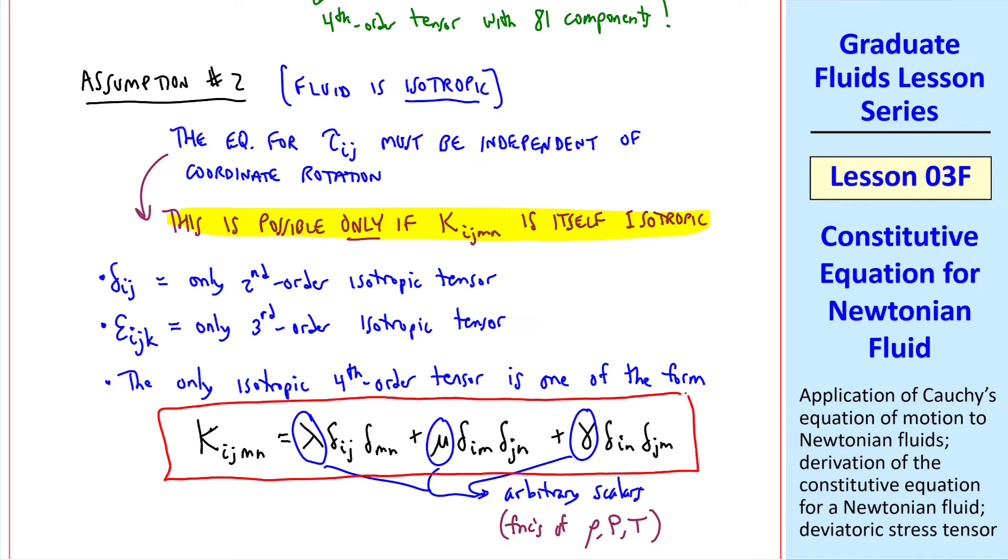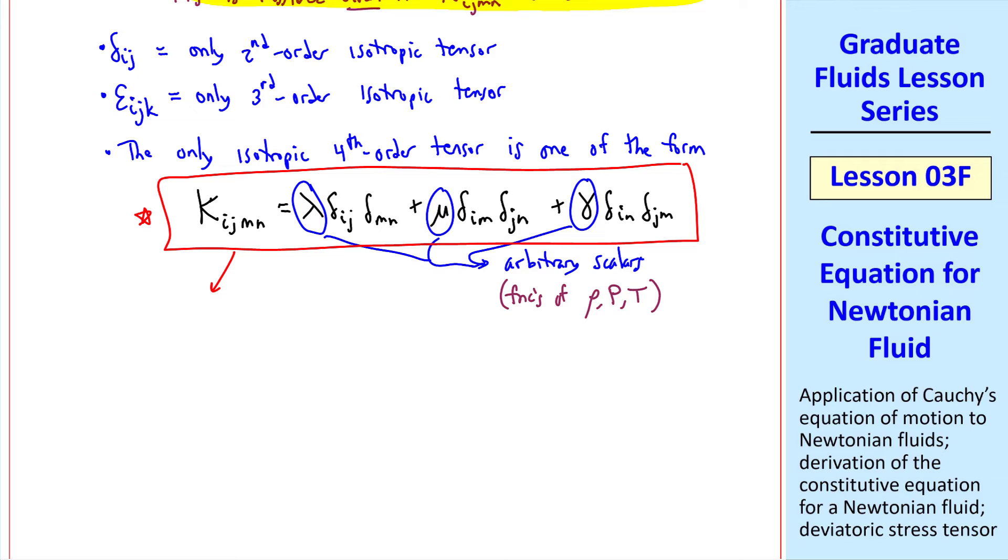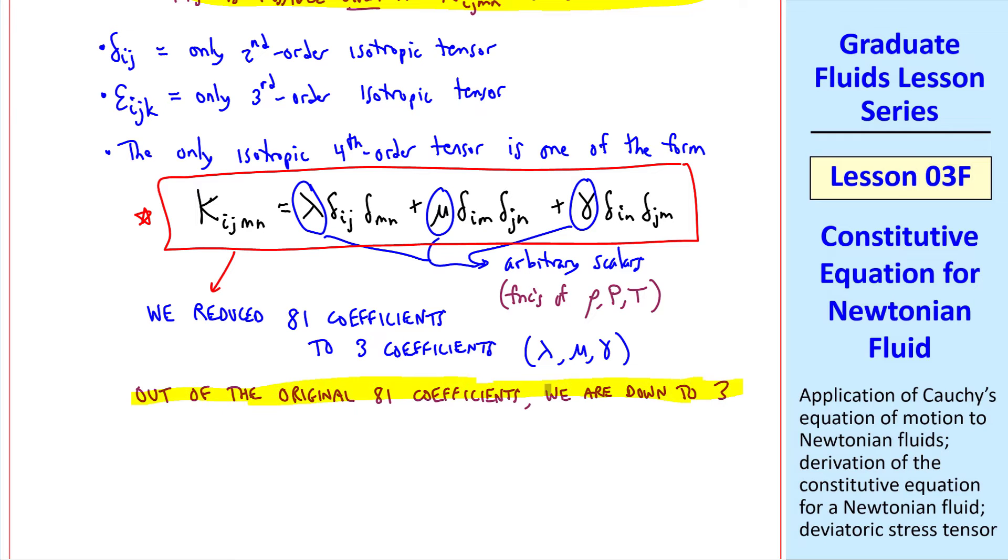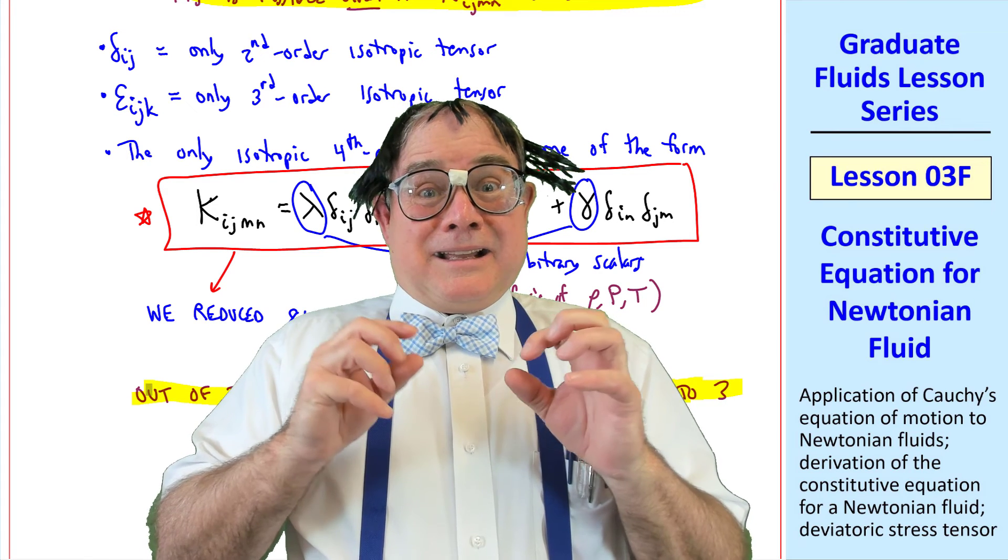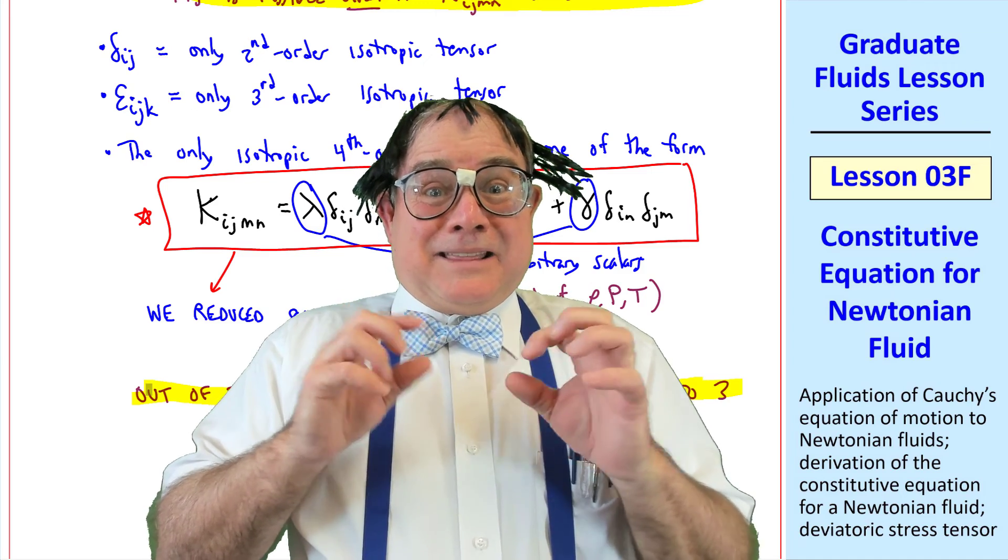Well, what does this equation do for us? While recall that k had 81 coefficients, since it's a fourth-order tensor, we've reduced the 81 coefficients to three coefficients, lambda, mu, and gamma. Or we can say, out of the original 81 coefficients, we are down to only three. This makes our life much easier. That's a lot better. Thank you, sir.